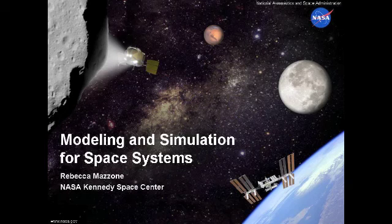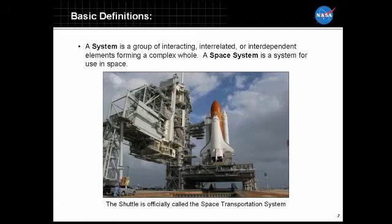To get started, I want to give you a few basic definitions to make sure we're all speaking the same language. The first thing we're going to look at is what a system actually is. A system is simply defined as a group of interacting, interrelated, or interdependent elements forming a complex whole. Interacting means things that are working with each other. Interrelated means they're connected to each other, and interdependent means they need each other. You use systems every day — your computer system, your phone is kind of a system, and if you have a gaming system at home, it's the same kind of thing.